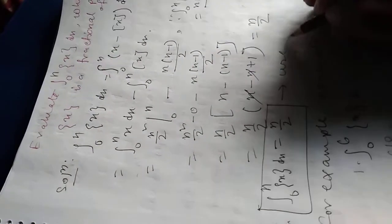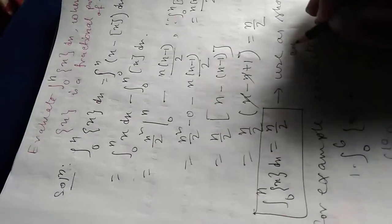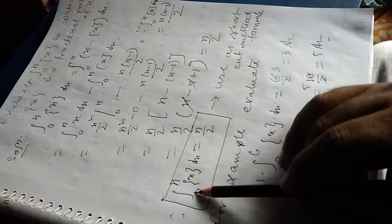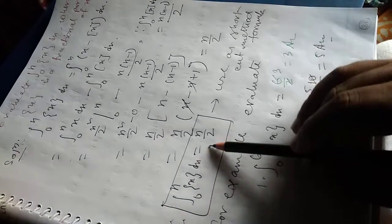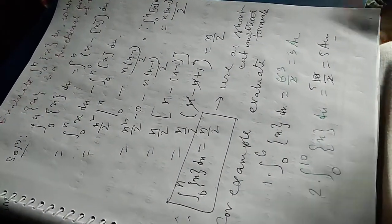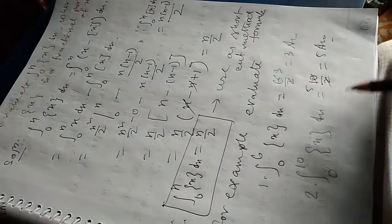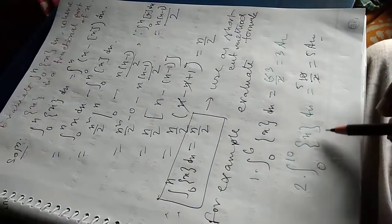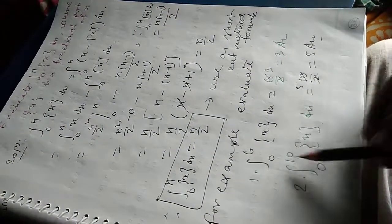You can use this as a shortcut method formula: the integral from 0 to N of fractional part of X dx equals N/2. For example, the integral from 0 to 6 of fractional part of X equals 6/2, which is 3. The integral from 0 to 10 of fractional part of X equals 10/2, which is 5. So it is clear — a very easy method.